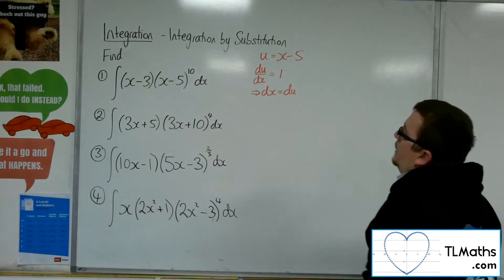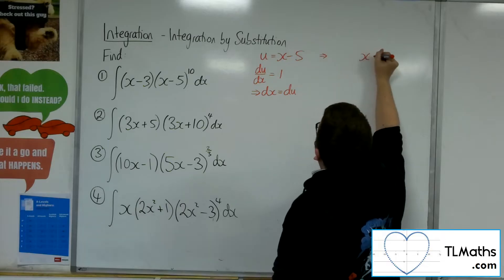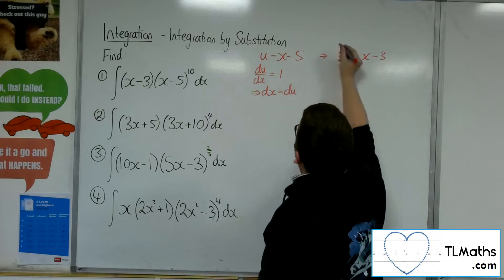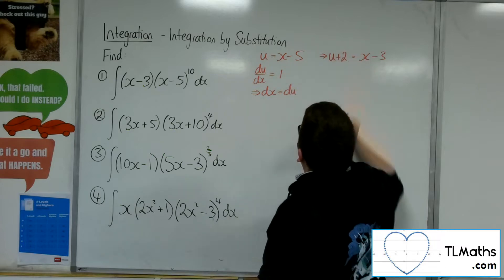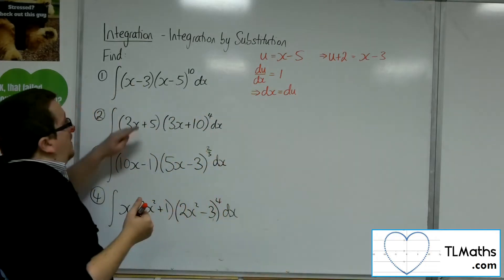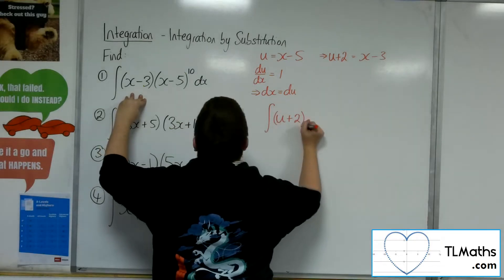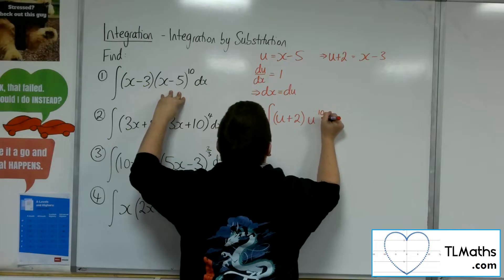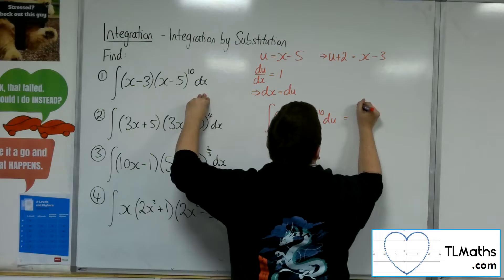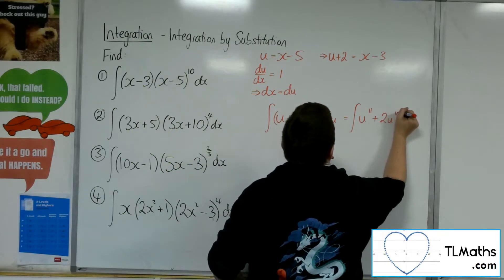We've got a replacement for dx. Now we don't have a replacement for x minus 3 yet, so in order to get x minus 3, I would have to add 2 to both sides of that equation. So u plus 2 must be x minus 3. So we have the integral of u plus 2 times u to the power of 10, and the dx has been replaced with du. Multiplying through by the u to the 10, we get u to the 11 plus 2u to the 10 du.